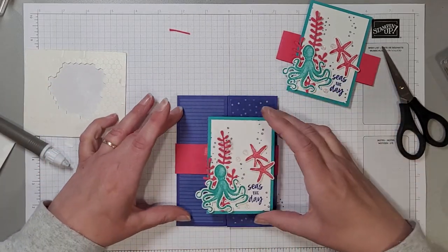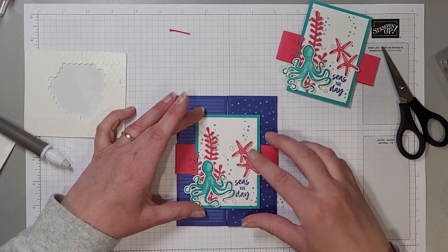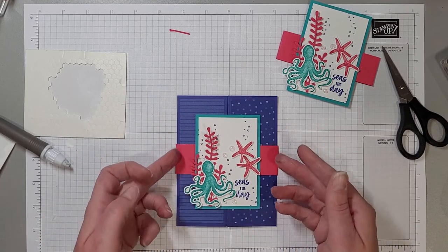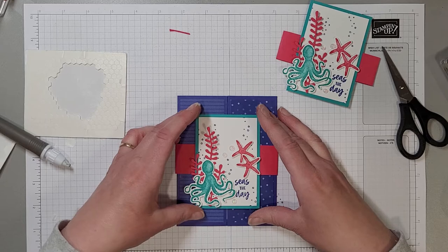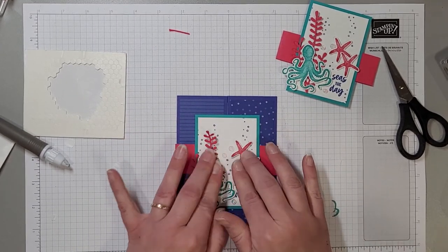All right so now we can just attach our lovely feature that we made here. And to do that we're going to again just put some adhesive. You want to be very mindful that you don't go too far and you don't get it wider than this piece otherwise you're going to see the glue.